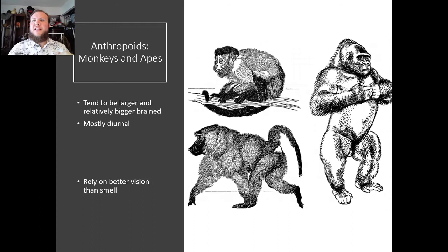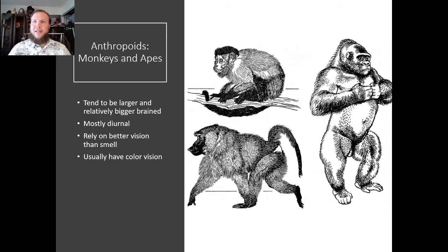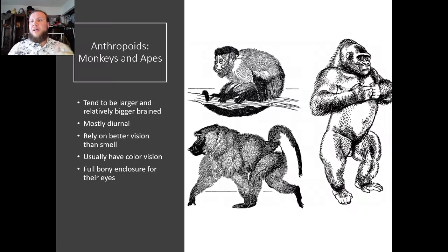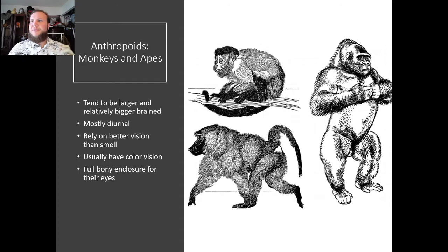Anthropoids are our monkeys and apes. They tend to be larger with a relatively bigger brain than the strepsirrhines and tarsiers. They're mostly diurnal and rely on better vision than smell, with more visual acuity than other primates. They have color vision and full bony enclosure of their eyes. Here we have three different types: capuchins, baboons, and gorillas. We can also divide between new world and old world monkeys.